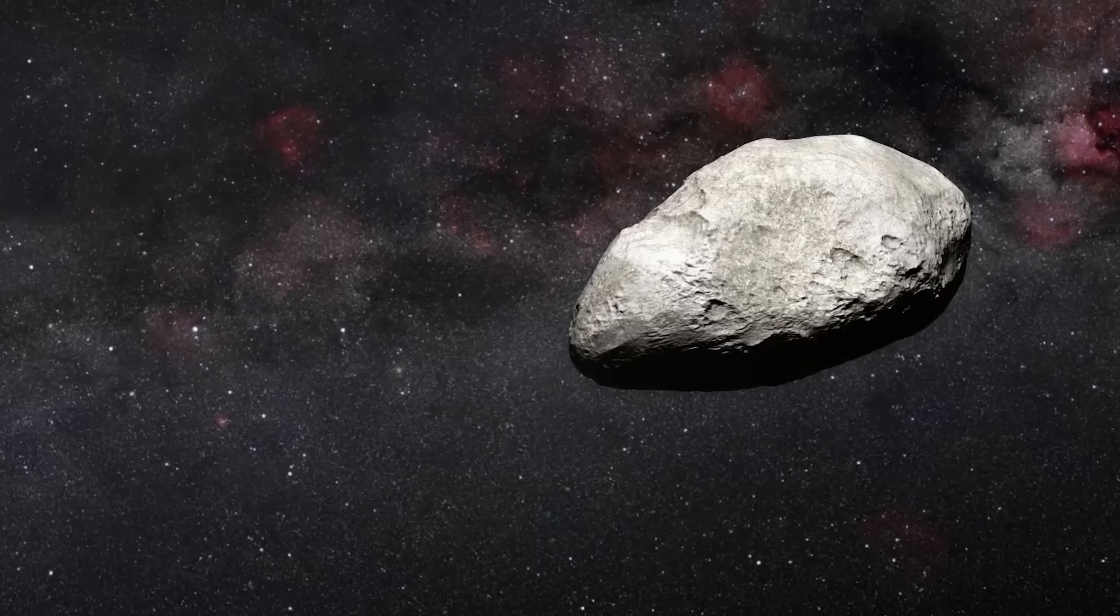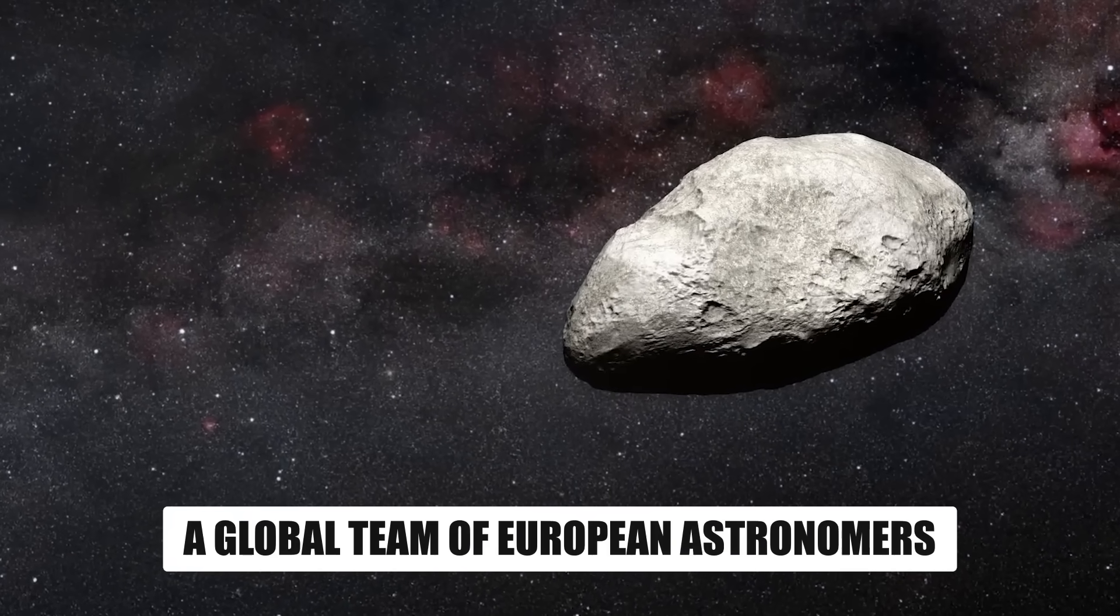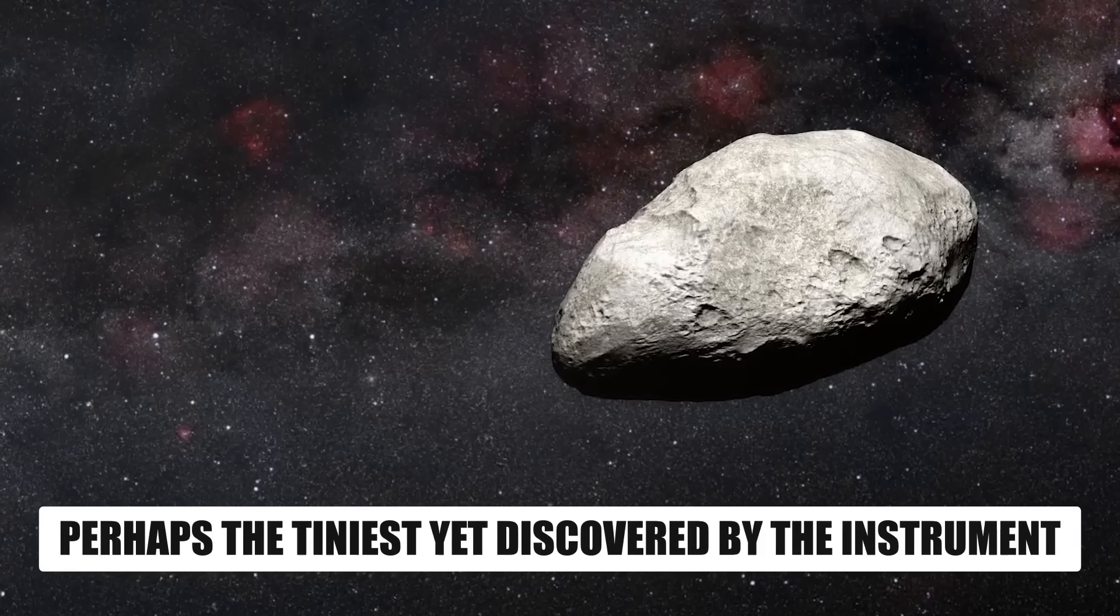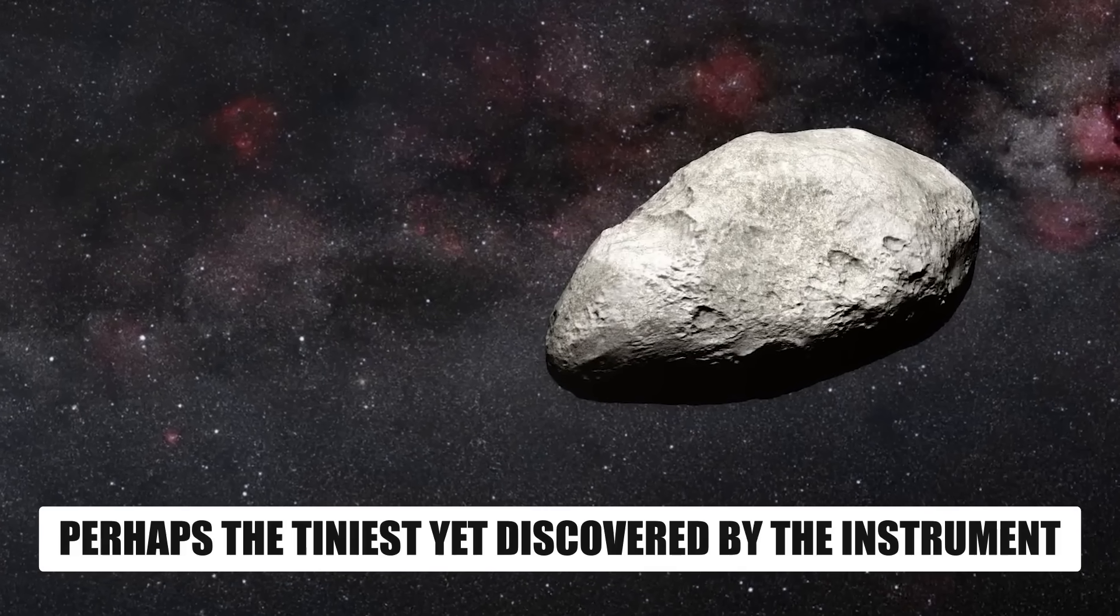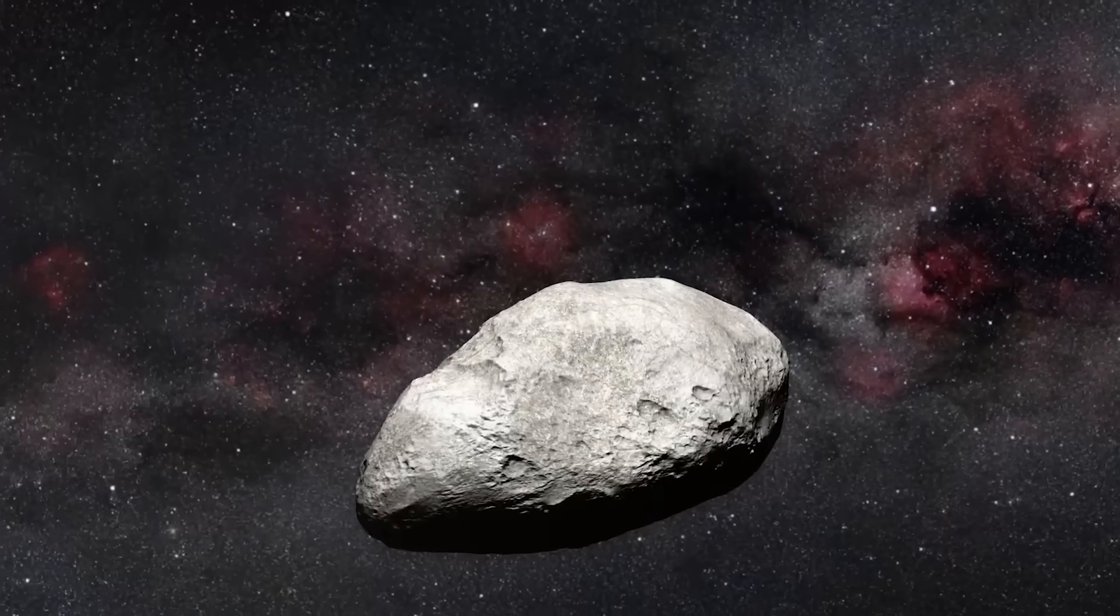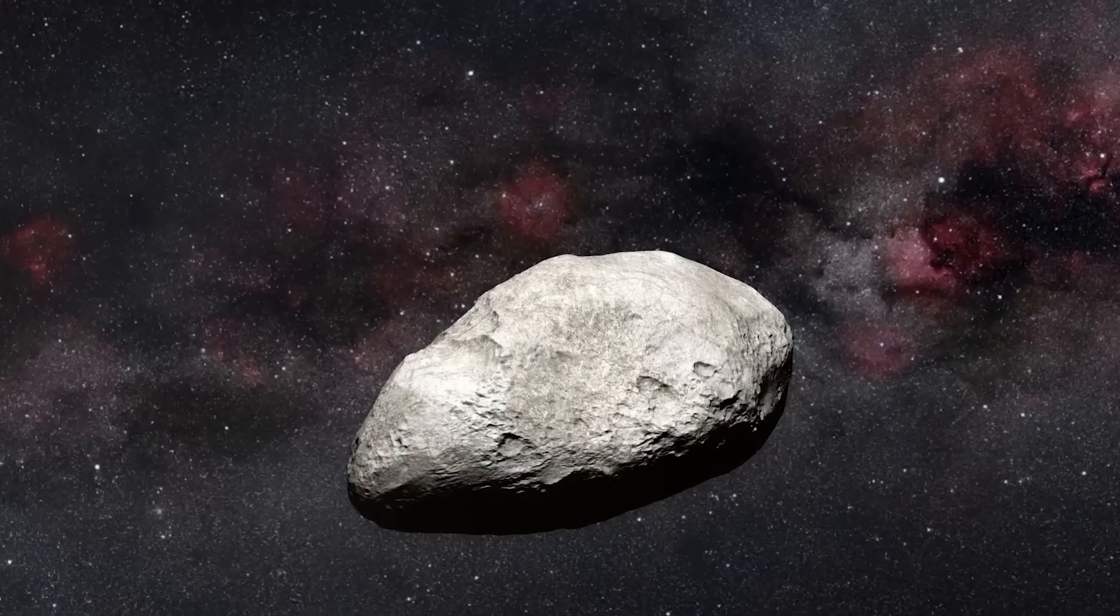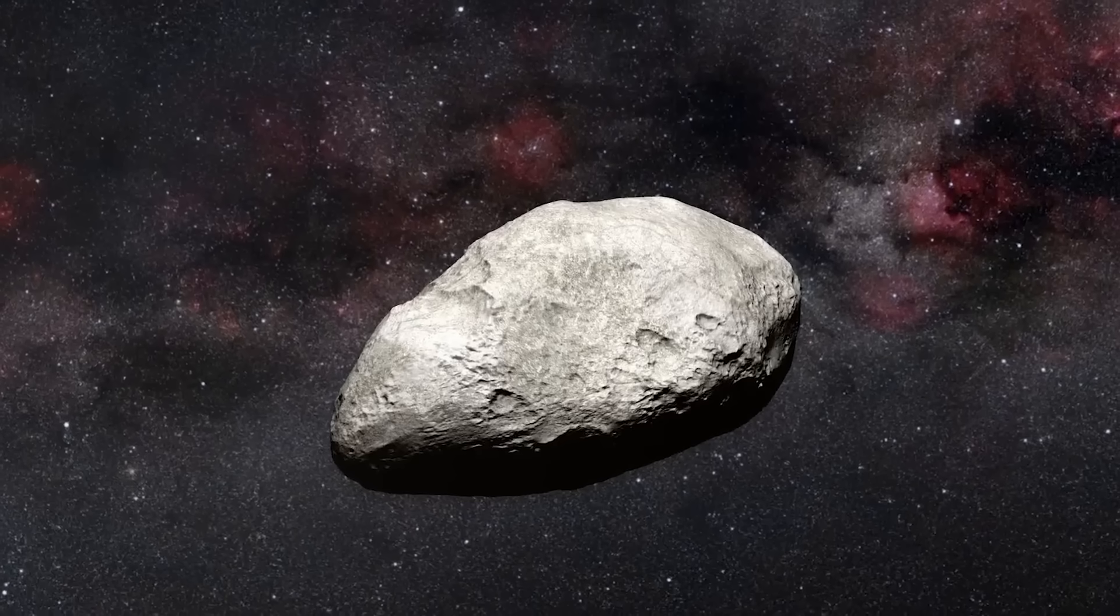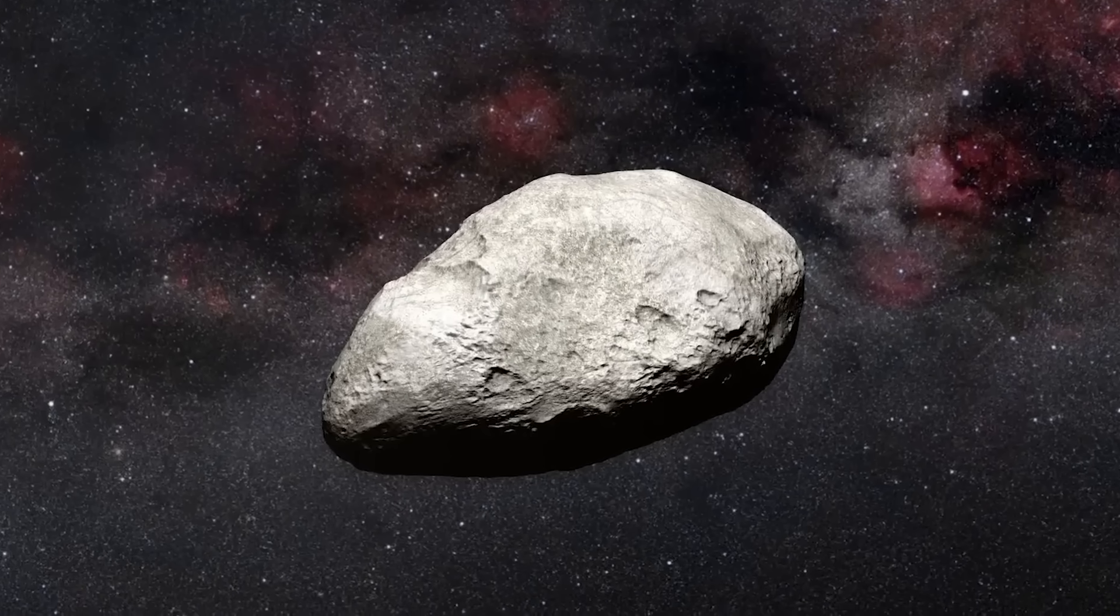In another groundbreaking discovery, a global team of European astronomers using the telescope found a small asteroid, perhaps the tiniest yet discovered by the instrument. Measuring between 300 and 650 feet, 100 and 200 meters in length, this asteroid was roughly the size of Rome's Colosseum.